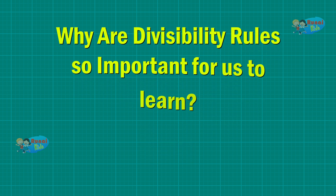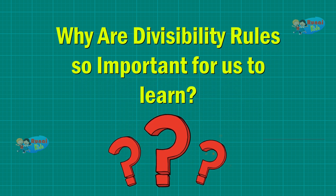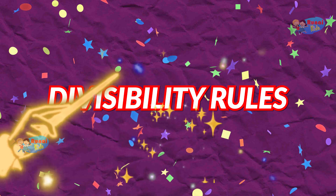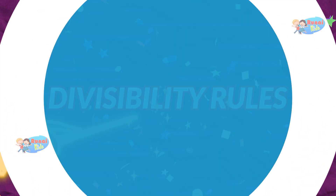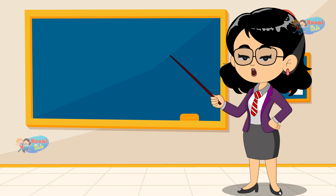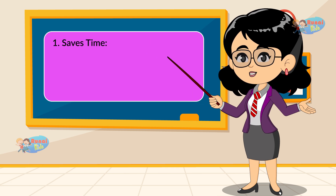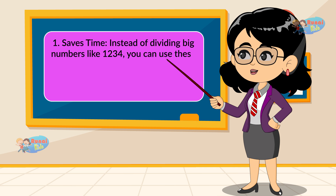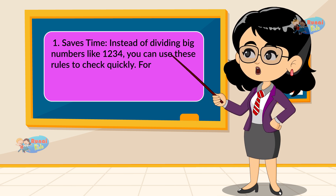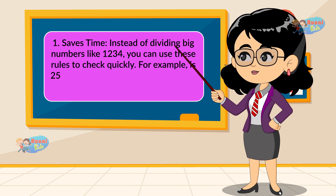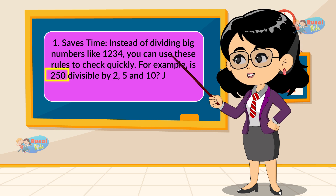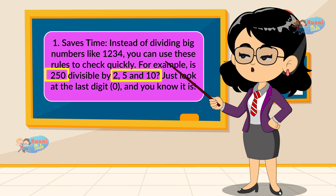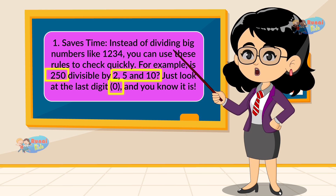Why are Divisibility Rules so important for us to learn? Divisibility Rules are like magic tools for math. They save time! Instead of dividing big numbers one by one, you can use these rules to check quickly. For example, is 250 divisible by 2, 5, and 10? Just look at the last digit 0, and you know it is.